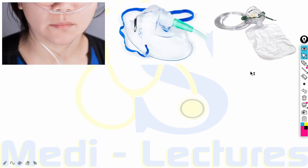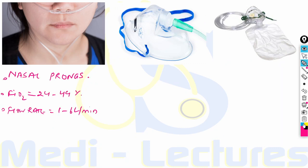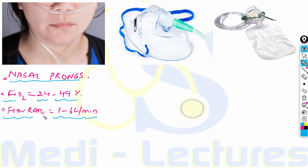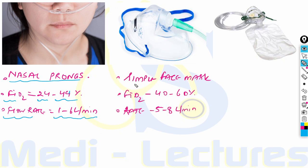Nasal prongs can provide a FiO2 from 24% to 44% at a flow rate of 1 to 6 liters per minute. It is important to note that flows more than 6 liters per minute from nasal prongs result in a waste of oxygen and should be used judiciously. The advantages are that the patient can eat, speak, and drink water easily — which is not possible with a mask.